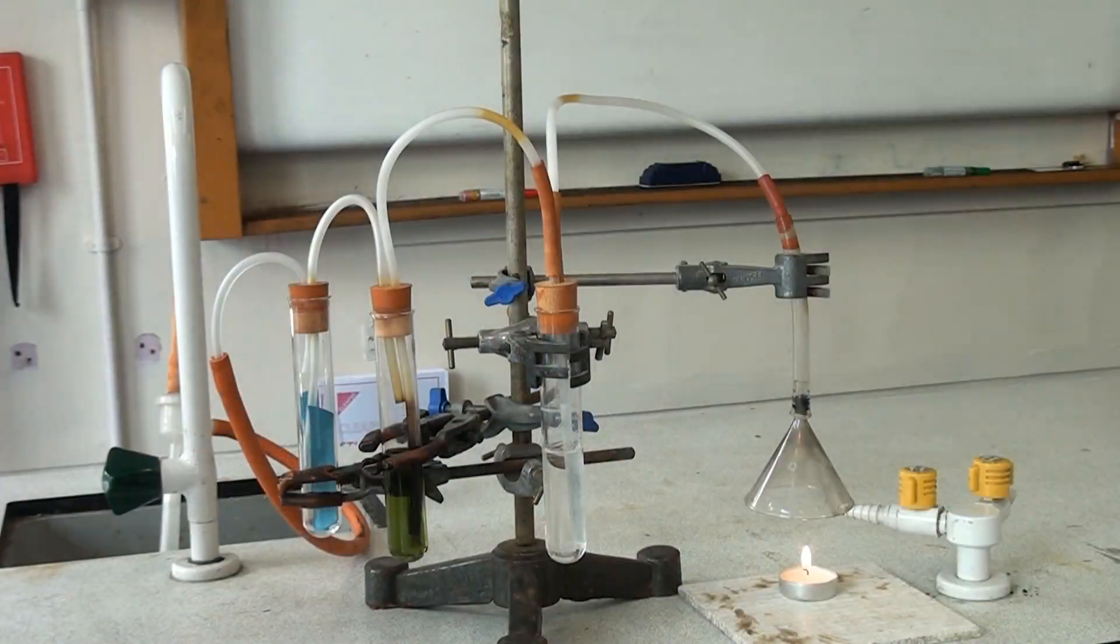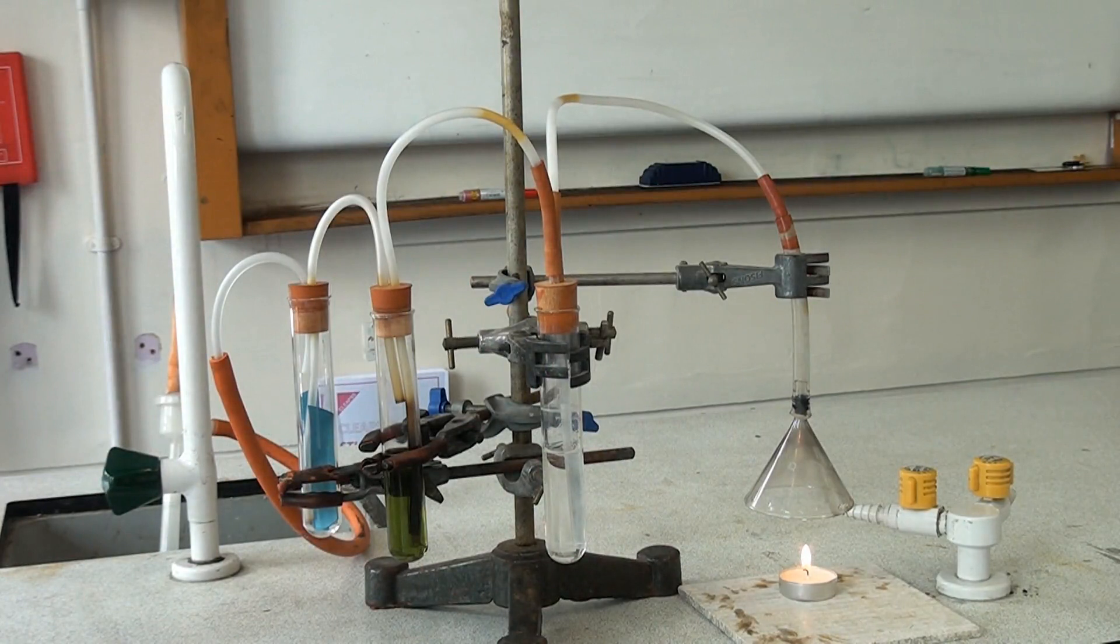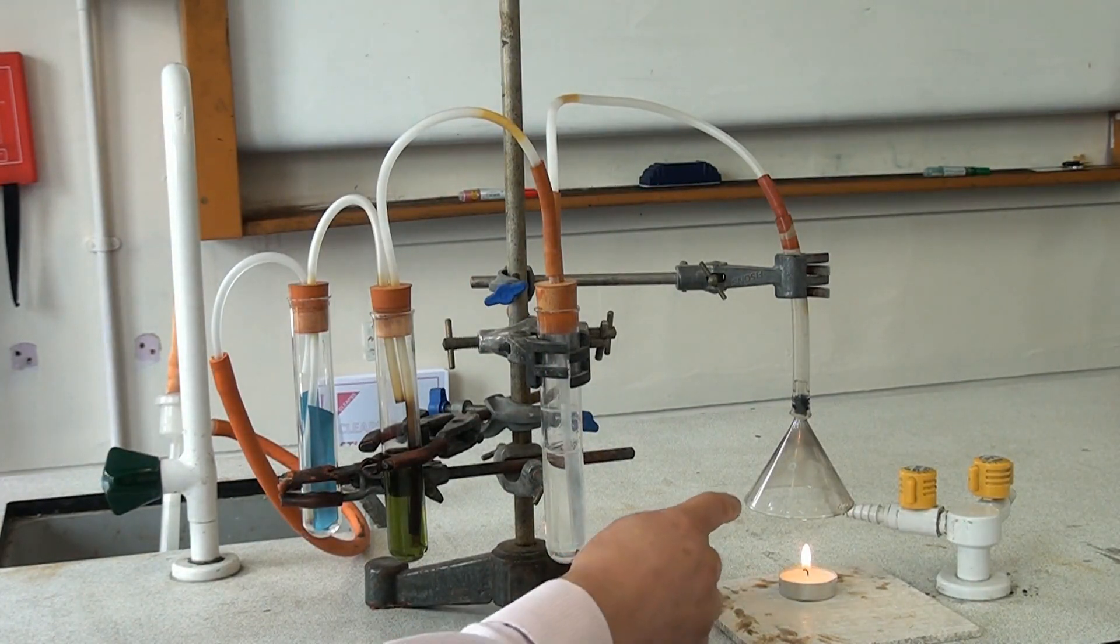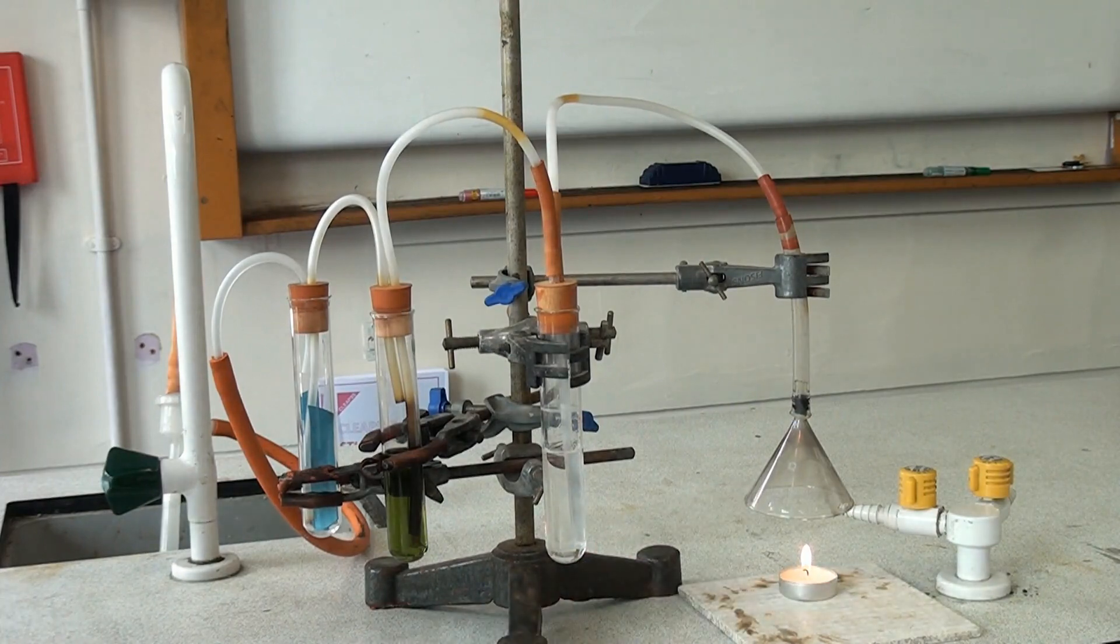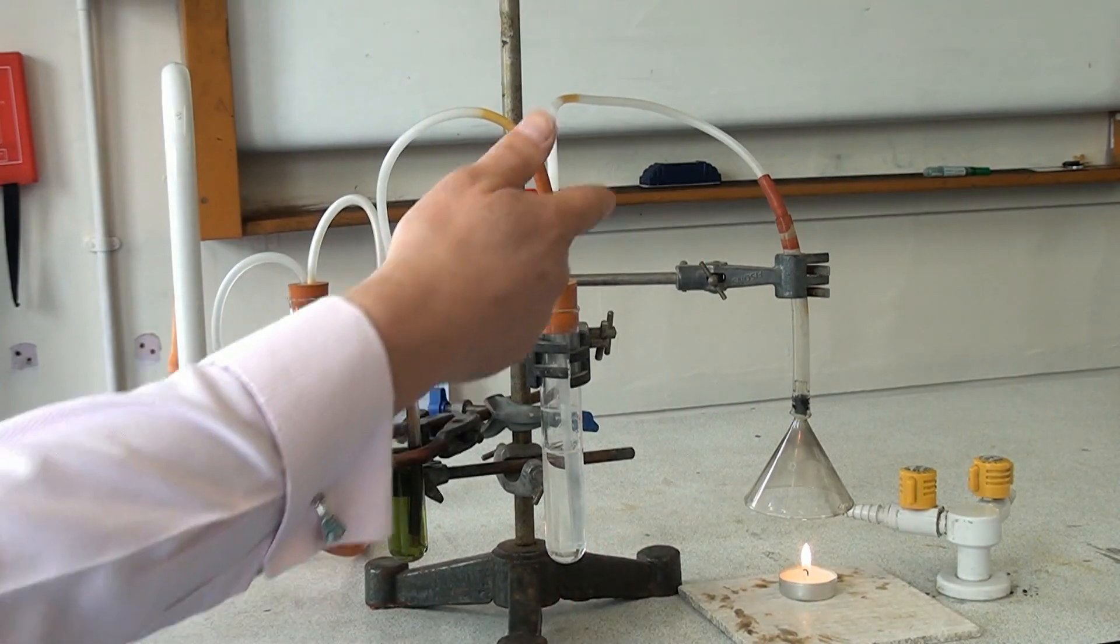Let me explain the different parts of this apparatus. We've got a burning candle here and the wax of the candle is a hydrocarbon, so we've got a hydrocarbon that's burning and we've got an upturned filter funnel to catch any gases given off and that's connected by a series of pipes to the first tube which has got some lime water in it and that's starting out colourless.